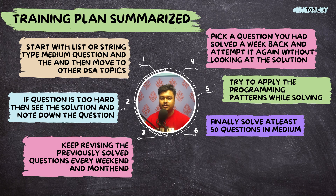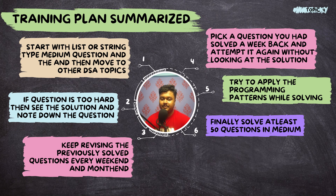Even if medium seems hard, you have to follow the same steps. Start with list or string type medium questions and then move on to other DSA topics. If a question is too hard, see the solution and note it down. Keep revising previously solved questions every weekend and month end. Pick a question you solved a week back and attempt it again without looking at the solution. Try to apply the programming patterns while solving. Finally, solve at least 50 questions in medium as well.